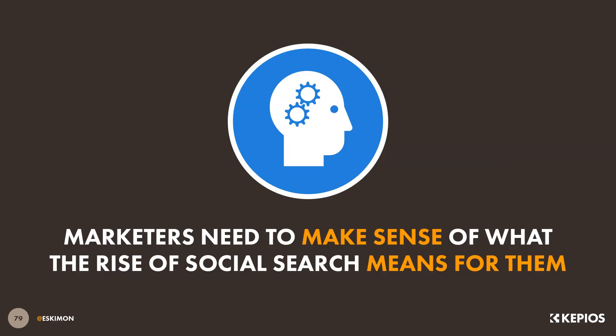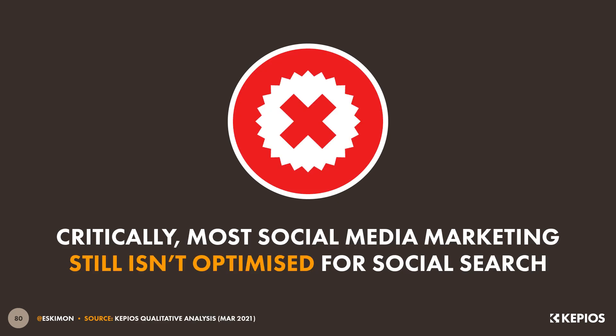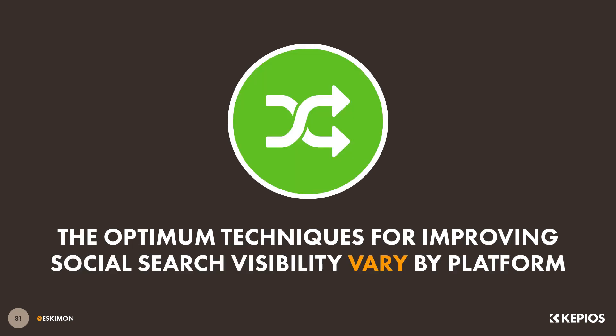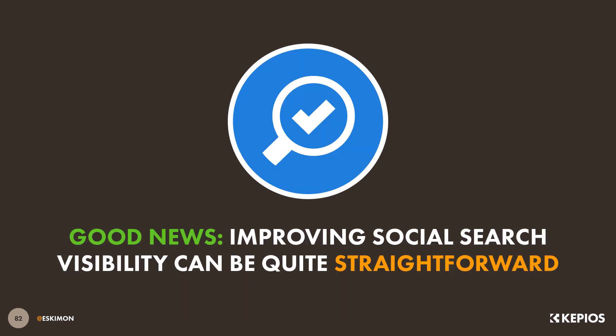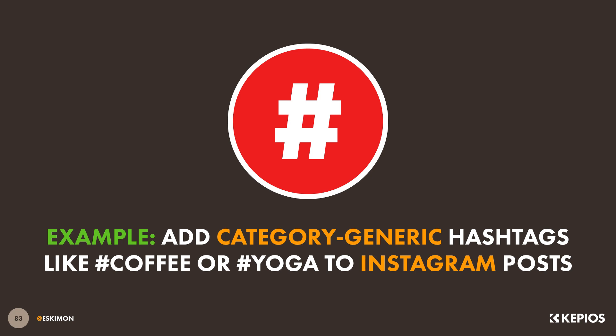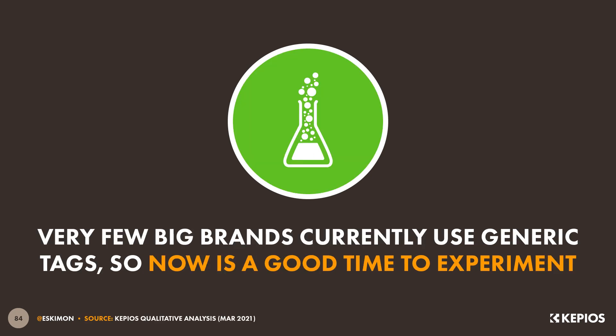So I'd suggest that now would be a good time to move social search up your planning agenda, especially because so few social marketing activities have been optimised for social search. Now techniques to improve social search visibility vary by platform, but the good news is that many of them are very straightforward. For example, to improve search visibility on Instagram, make sure that you include category generic hashtags like 'coffee' or 'yoga' to your posts alongside the usual brand and campaign-specific tags that you're probably already using. In fact, very few of the world's top brands currently include these generic tags on their Instagram posts, so this might be a good opportunity for you to steal a bit of competitive advantage.